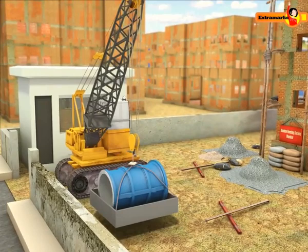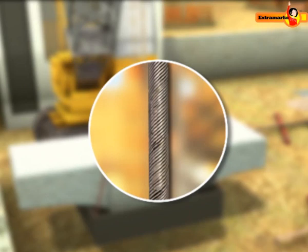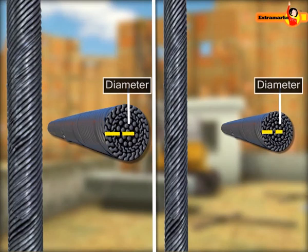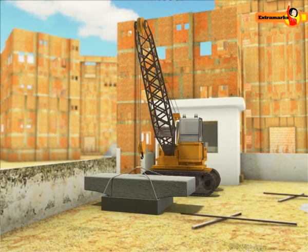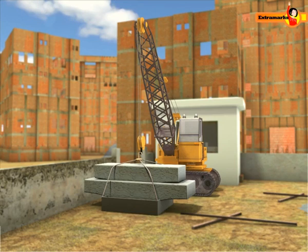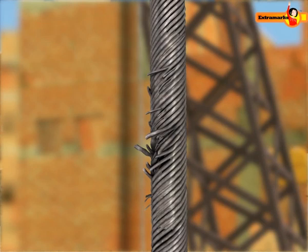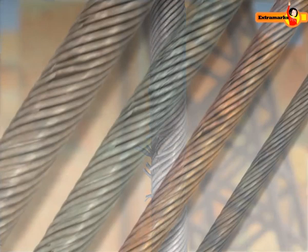You might have seen a crane lifting a heavy load on a construction site. The cranes have a thick metallic rope to which the load is attached. The required diameter of the rope is governed by its elastic limit and the load to be lifted. If the load on a metallic rope is increased, the rope will deform due to the increased amount of stress and strain on it. The strength of metallic ropes depends upon the type of material used and its diameter.